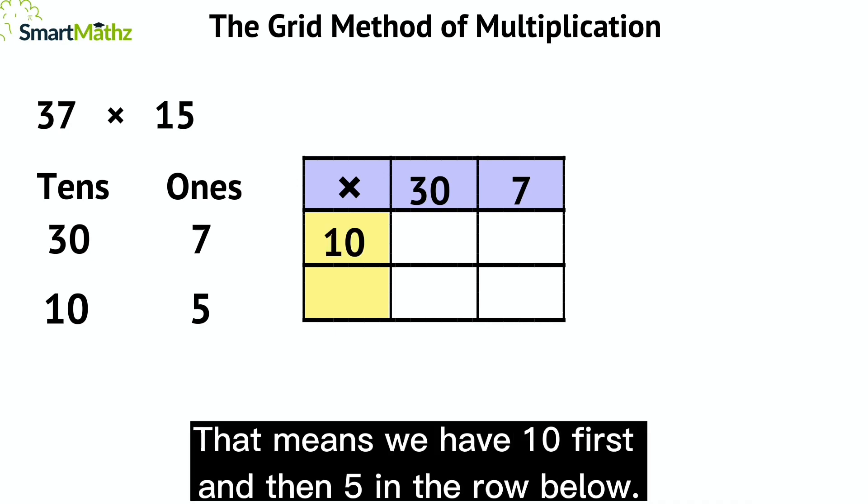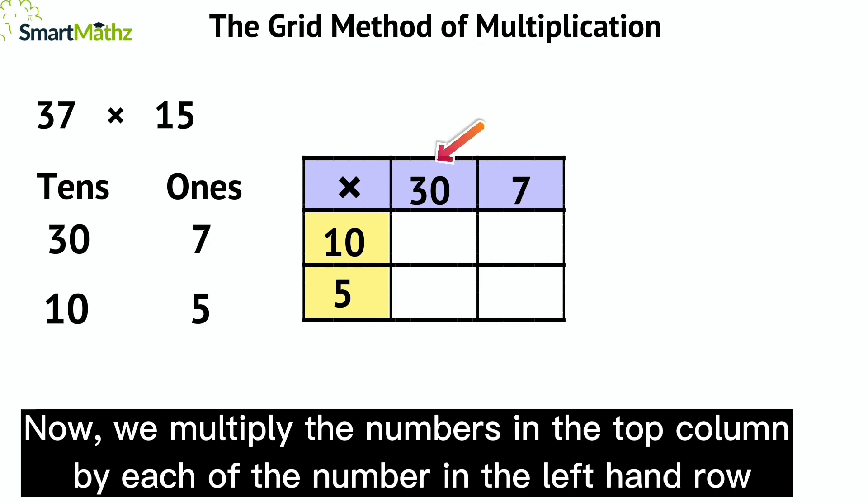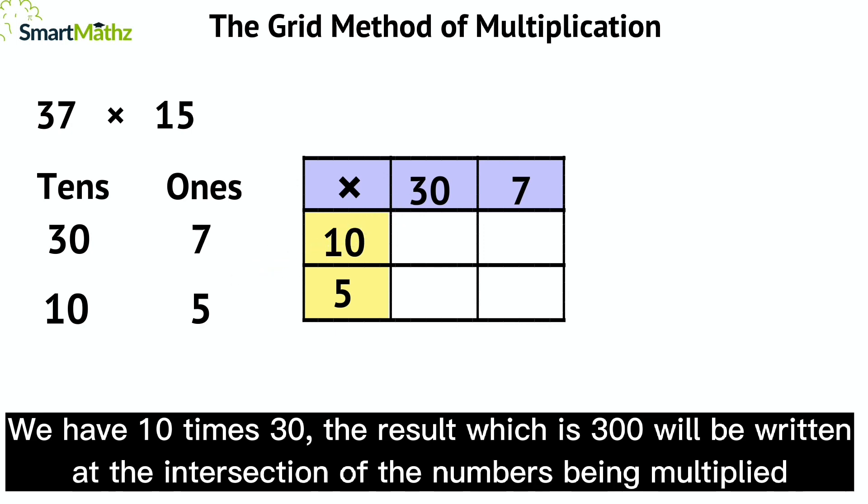Now we multiply the numbers in the top column by each of the numbers in the left-hand row. We have 10 times 30. The result, which is 300, will be written at the intersection of the numbers being multiplied.